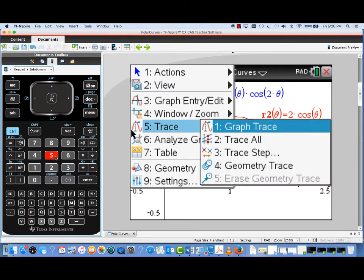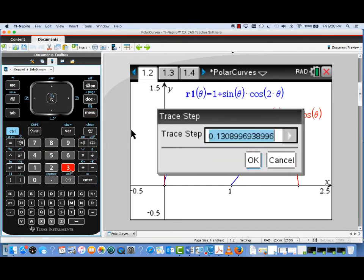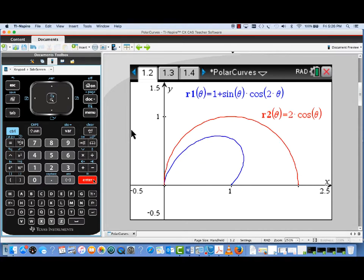Okay, let's look at some other things we could do with these polar curves. I've gone back to the graphing window, and I want to do some tracing. But first I want to change the trace step to match the Theta step that we used for these curves. So I'm changing the trace step to Pi over 60.